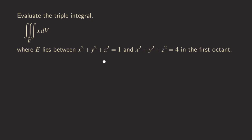Hello everyone, it's Wilson here. Today let's talk about evaluating this triple integral over the solid region E. E is the portion that lies between the unit sphere and the bigger sphere with radius 2 in the first octant.